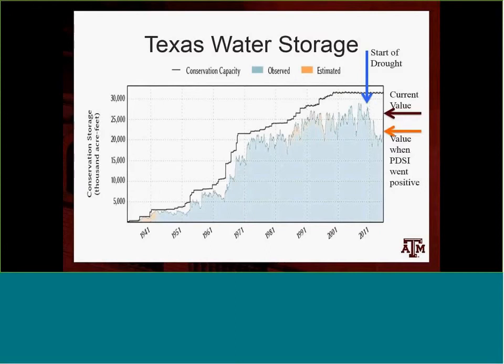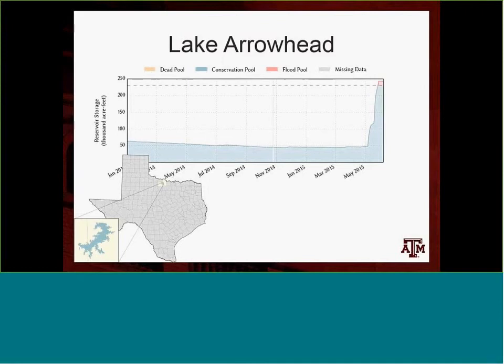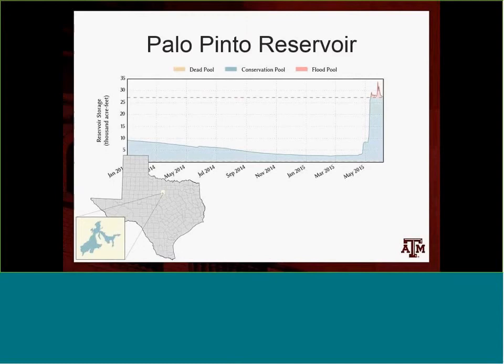Briefly highlighting a few reservoirs that show that story. First, Lake Arrowhead, the reservoir supplying Wichita Falls, went from 20% of capacity to over 100% in a two-week period. Palo Pinto Reservoir, looking over the past year, was declining — they had less than six months of water remaining for the cities relying on it for water supply. Again, a couple of weeks and it's full.